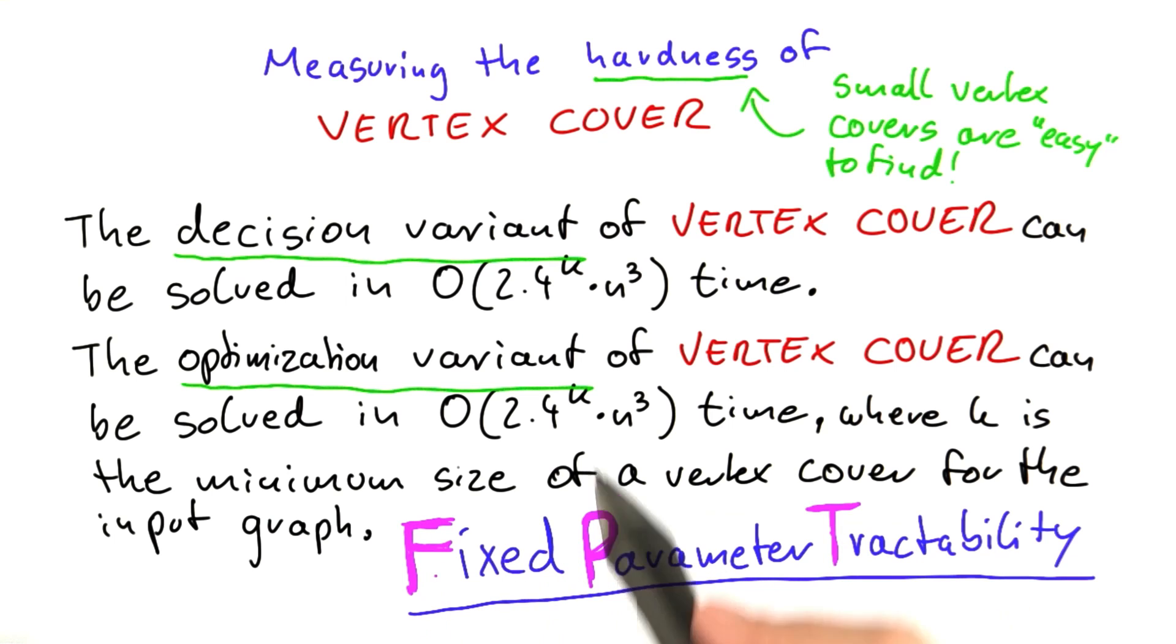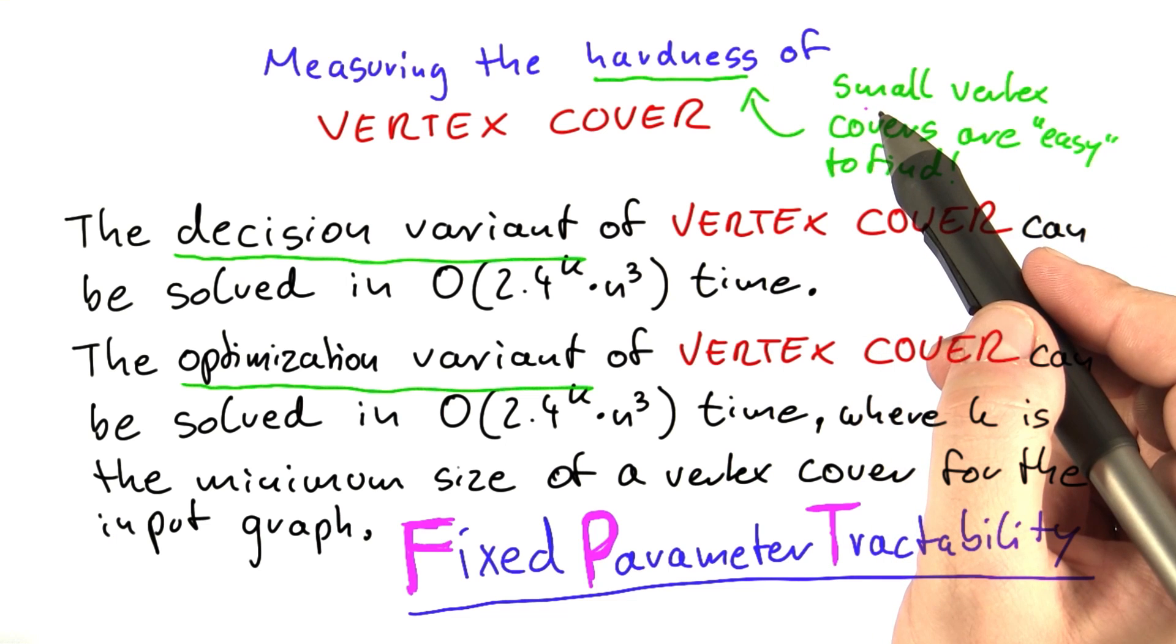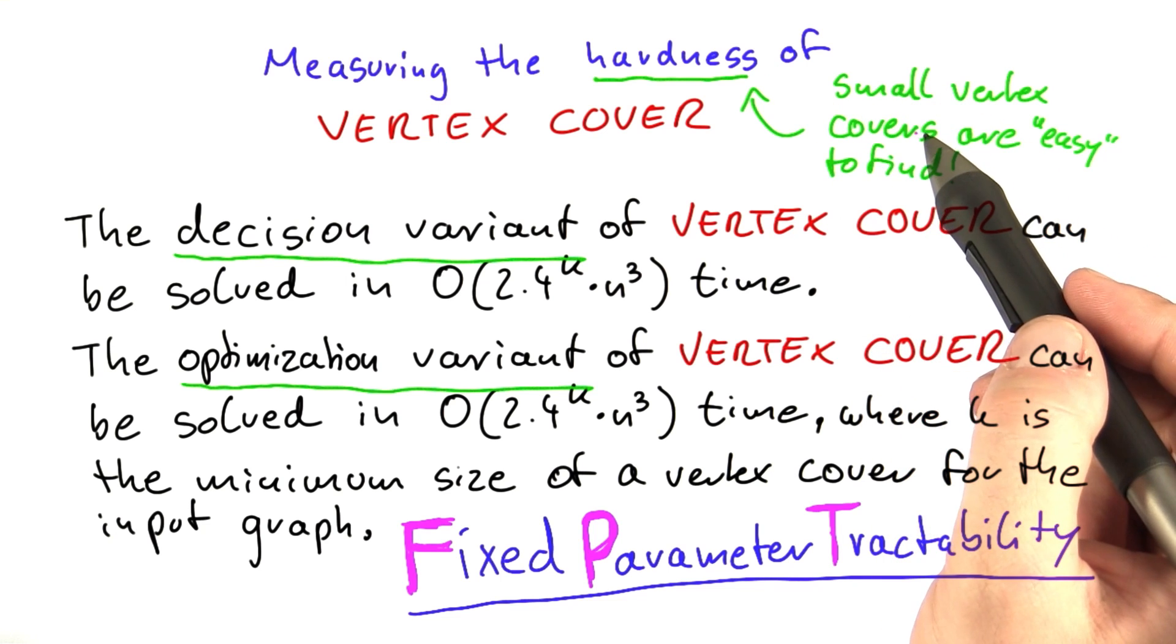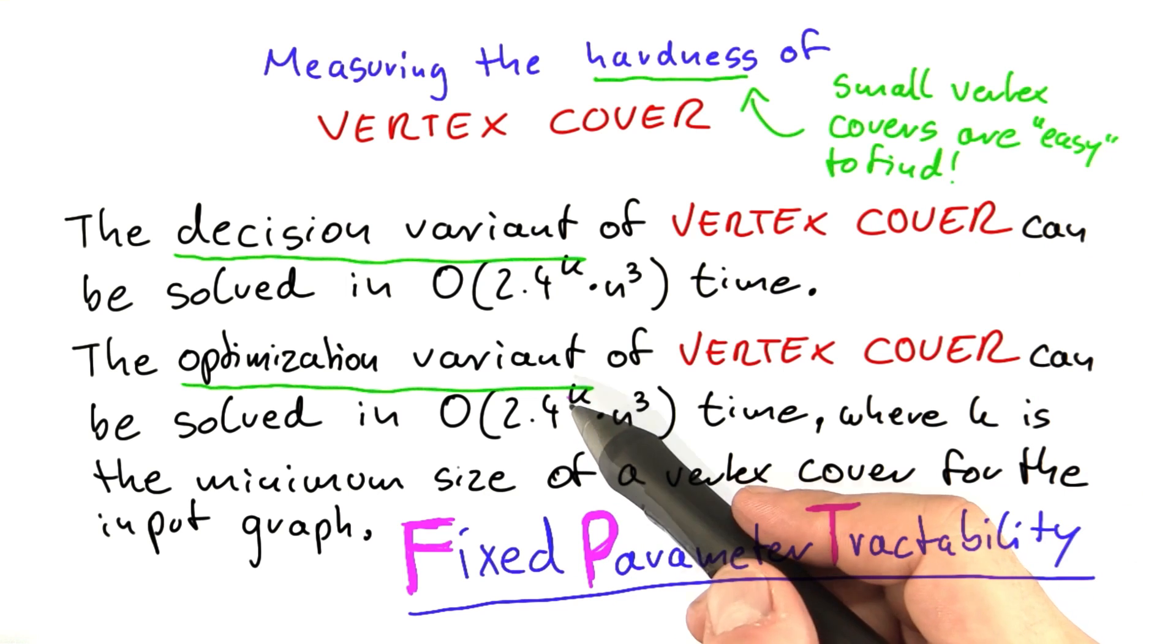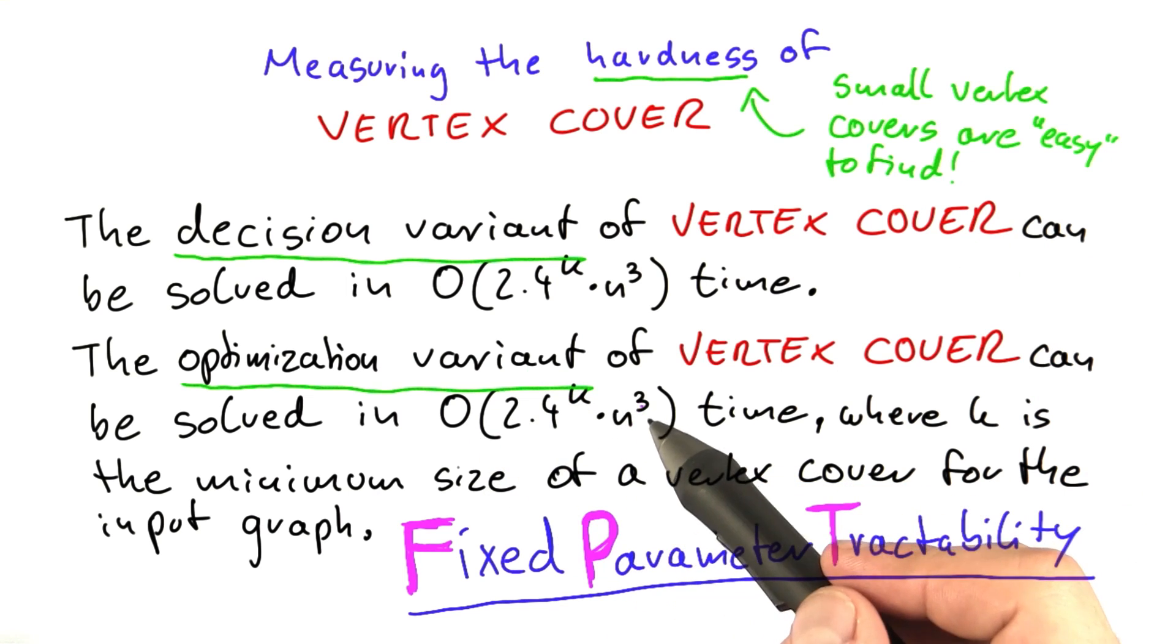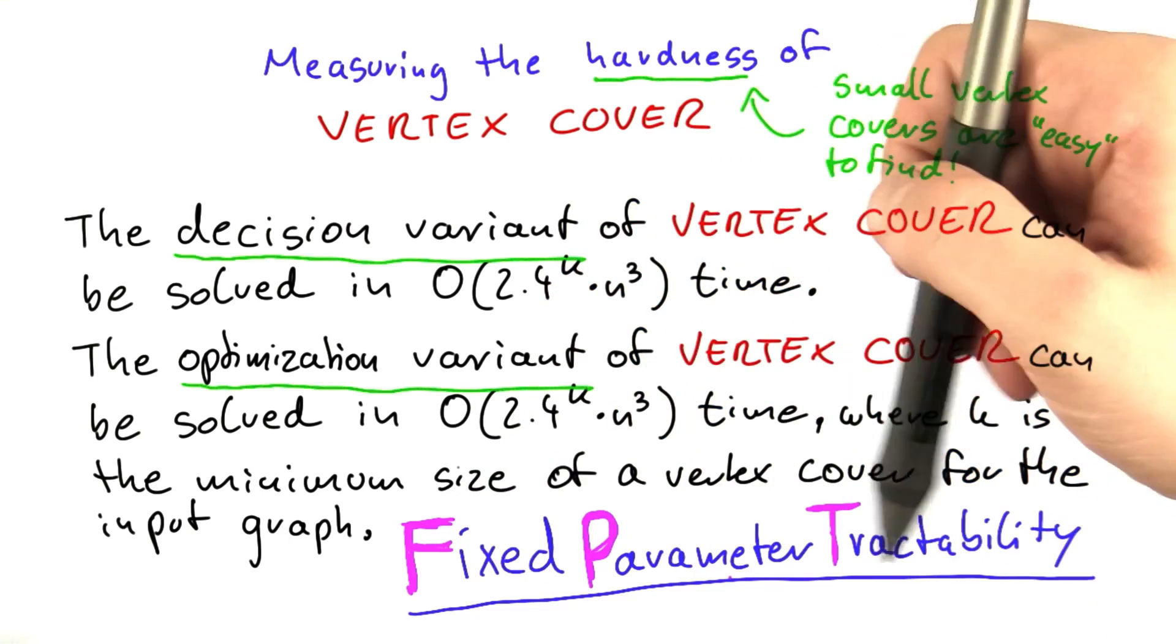What that means is that as long as the parameter that measures the hardness, and in this case it's the size of a vertex cover for your graph, as long as that parameter is small or fixed, then you can solve that problem in polynomial time. So as long as the parameter is fixed, the problem is tractable.